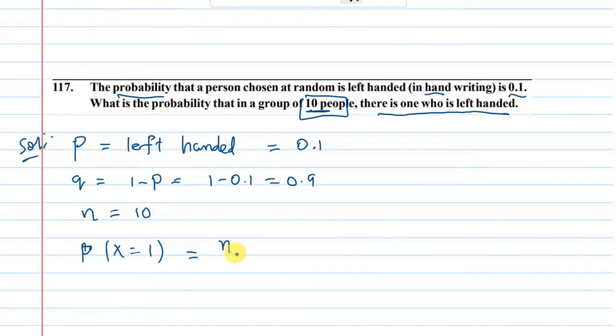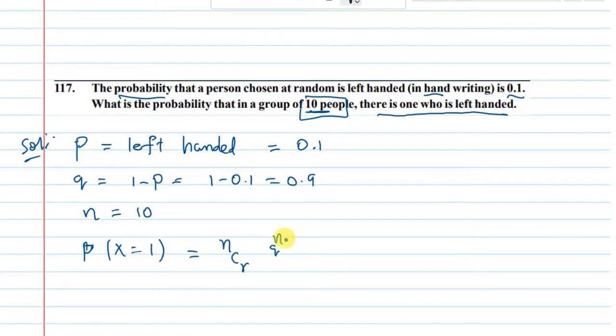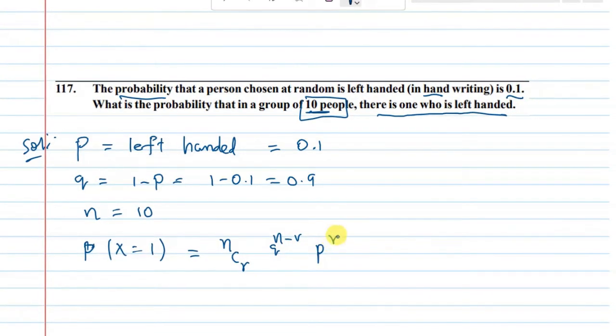The formula is n C r, q power n minus r, and p power r.